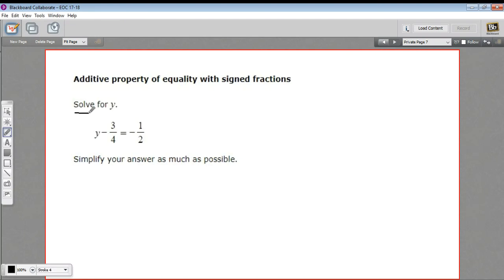In this problem, we're being asked to solve for y. When we solve for a variable, what we want is to get y alone on one side of the equation, one side of the equal sign, and something else on the other side, usually a number. That tells us what y is, what y equals.